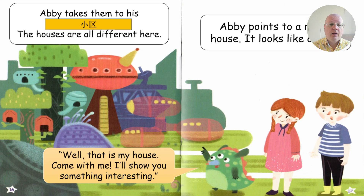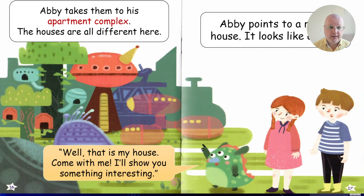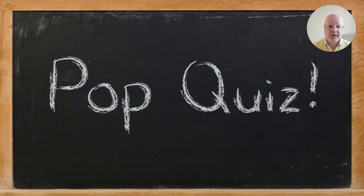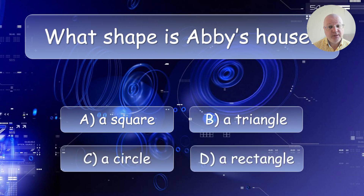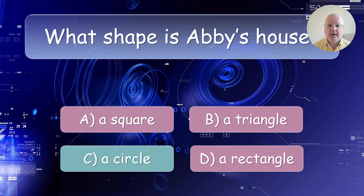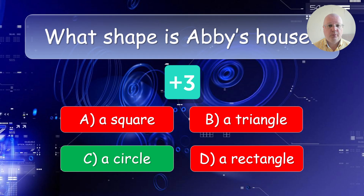Here's another example. Students read a story — any text — and difficult words are highlighted. When we finish reading, I invite a student from each team and we have a pop quiz. The question shown is: 'What shape is Abby's house?' It's in the text, so if they paid attention they would know Abby's house is round, which means it's a circle, and they get three points.